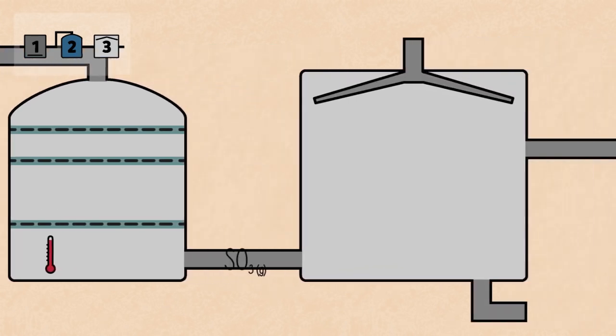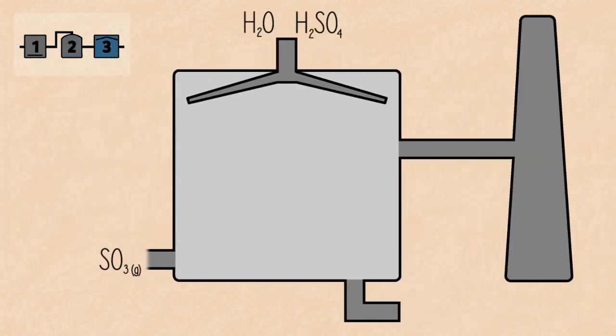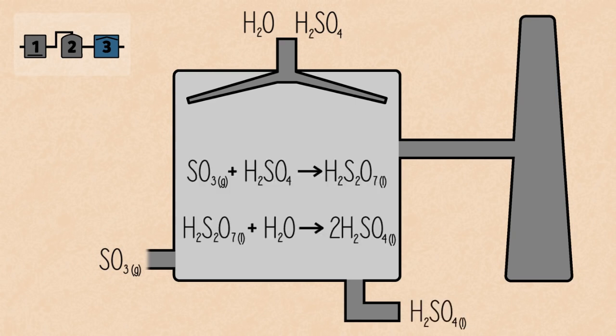Finally, in stage 3, sulfur trioxide is converted into very concentrated sulfuric acid and the equation is shown now. This liquid is also known as oleum. It is very viscous and releases acidic fumes. It is very important at this stage to add water carefully, usually as a mist of sulfur trioxide.